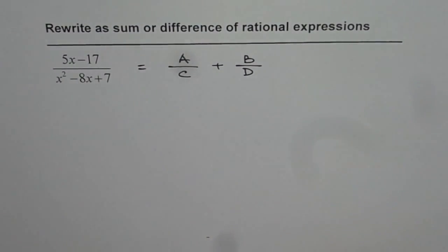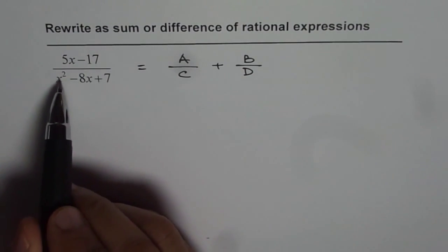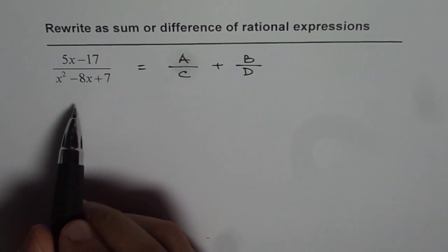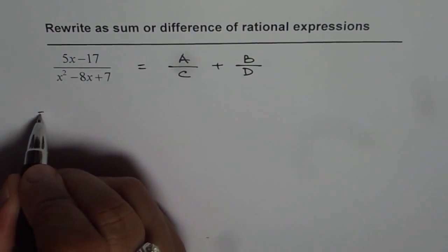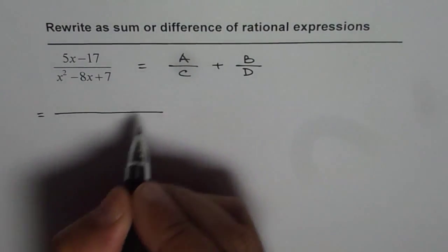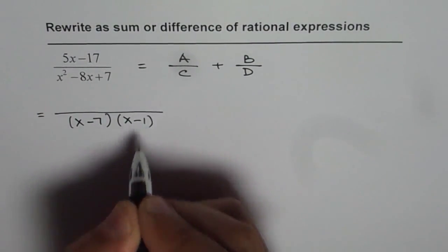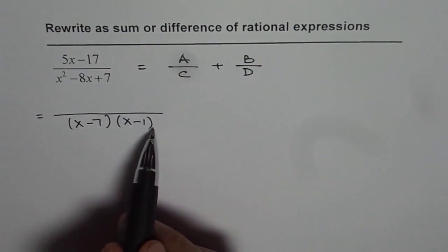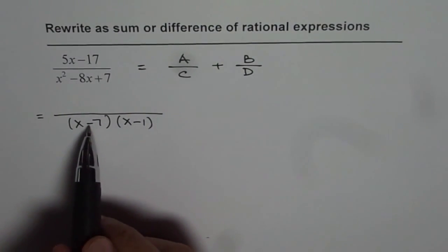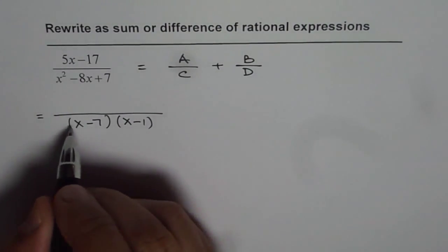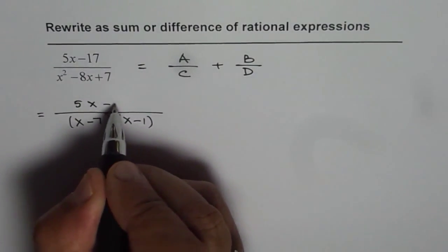Now how do we do that? We are given 5x minus 17 divided by x squared minus 8x plus 7. Now we can factor the denominator. We need product of 7 and sum of minus 8. So we can write this rational expression as x minus 7 times x minus 1. When you multiply this, you get product of 7 and sum of minus 8. So that is the denominator and the numerator is 5x minus 17.